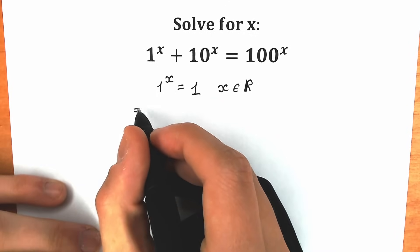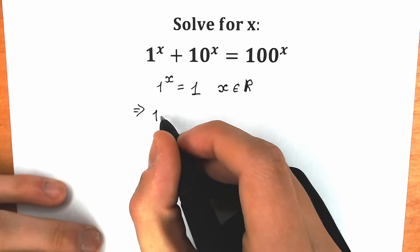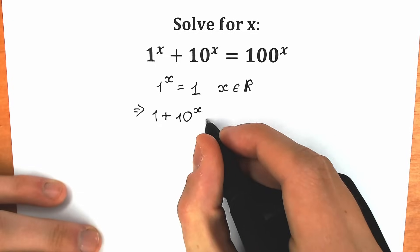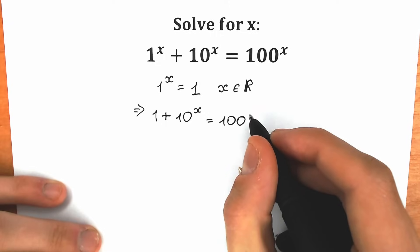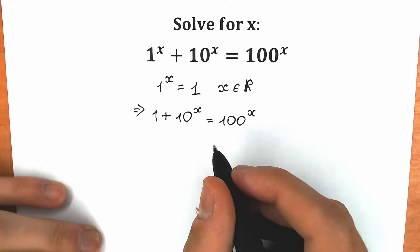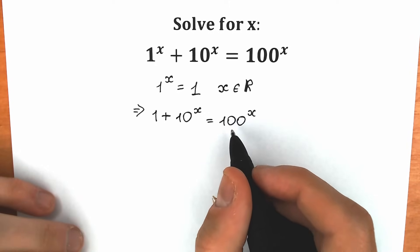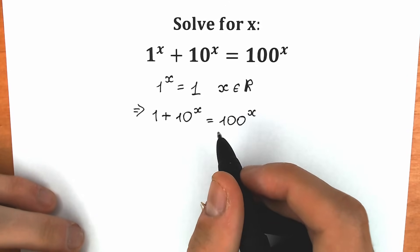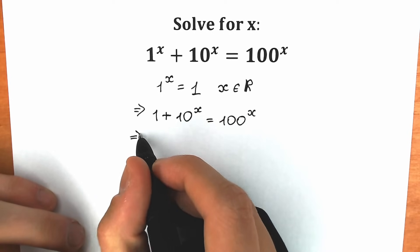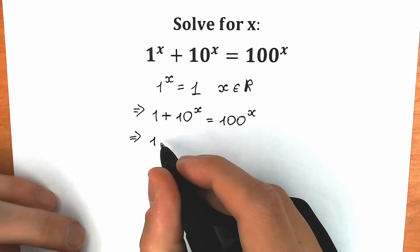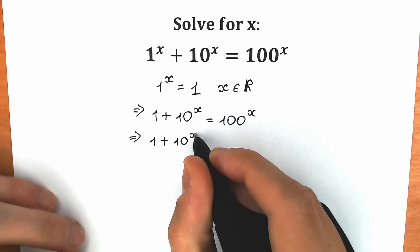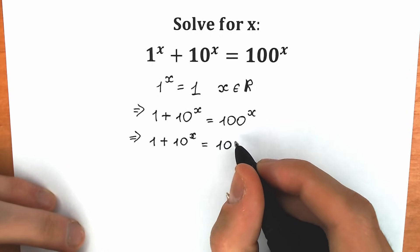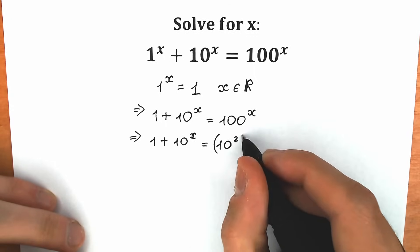As a result, we have 1 plus 10 to the x equal to 100 to the power x. And let's solve it. Instead of 100, we can easily write 10 squared. So right here we have 1 plus 10 to the x equal to 10 squared, and we're going to write this as 10 squared to the power x.